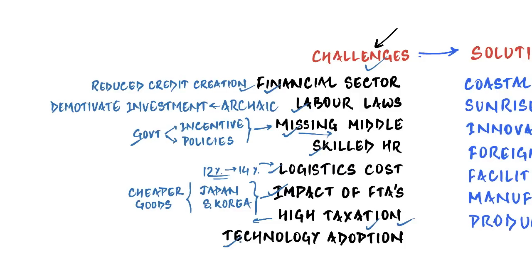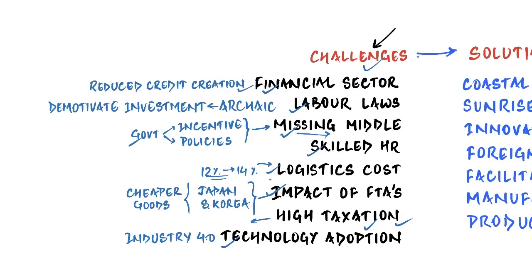Finally, there is a lack of technology adoption. New technologies like AI, data analytics, machine-to-machine communications, and robotics — collectively called Industry 4.0 — are a bigger challenge for SMEs than for large-scale manufacturers. Other reasons include cumbersome land acquisition procedures, poor ease of doing business, policy uncertainty, and poor infrastructure. These 8 to 9 points are the most significant challenges and are more than sufficient for a 150 or 250-word UPSC answer.